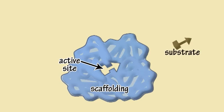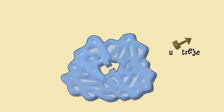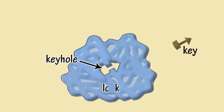The substrate molecule is said to fit the active site the way a key fits a lock. The substrate molecule is the key, the active site the keyhole, and the enzyme the surrounding lock.